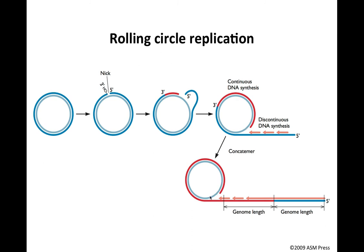As the red complementary strand is made continuously all around the circle, it eventually makes a full-length circle — but then it keeps going around and around, making a long DNA product made up of genome-length pieces. We started with a blue genome, and the red complement follows it. After the first red product is made, the enzyme goes around the circle again, making what is known as a concatamer — multiple units of the genome covalently linked together. Now those have to be made double-stranded, since the genome is double-stranded, and that happens by discontinuous DNA synthesis.